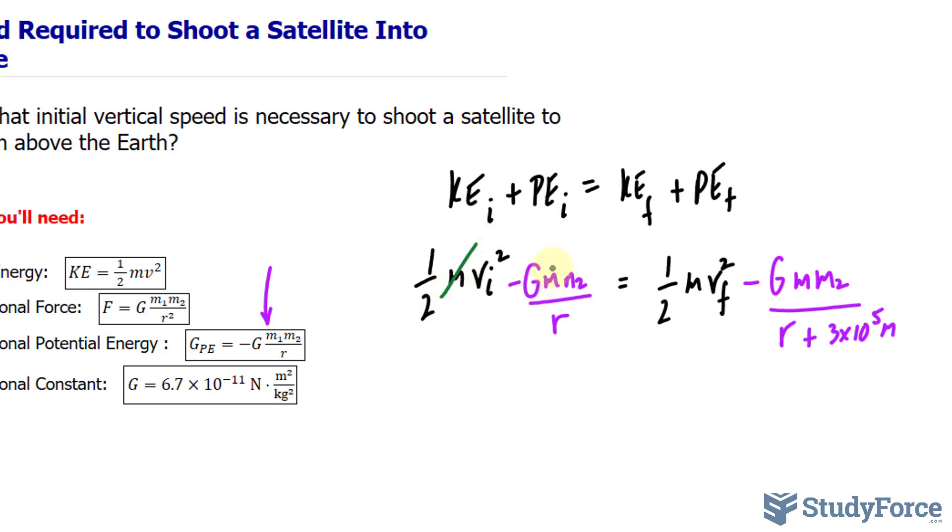So since all terms have the factor m, they would cancel out eventually. In addition, because this object is 300 kilometers above Earth, it's no longer coming down. It's in orbit.